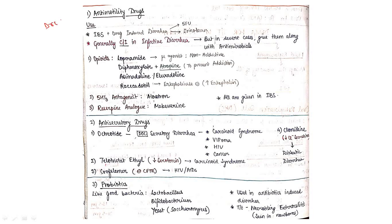The first group is antimotility drugs. They can be used in IBS and drug-induced diarrhea. You must remember which drugs can induce diarrhea: 5-FU, irinotecan, all anti-cancer drugs can induce diarrhea.